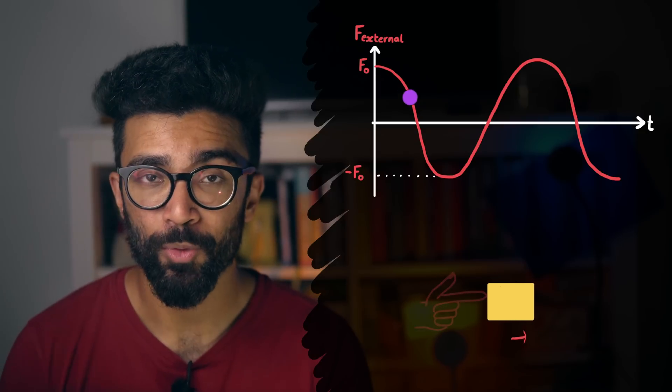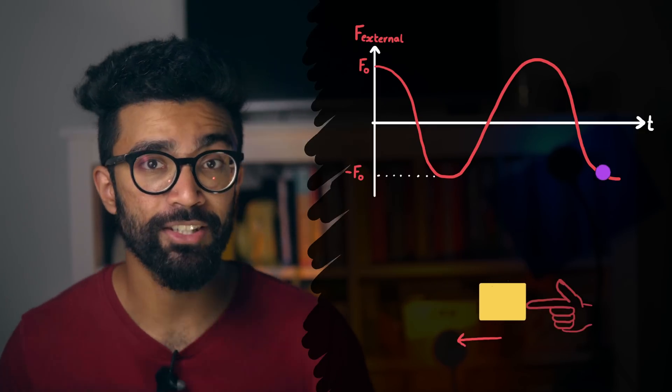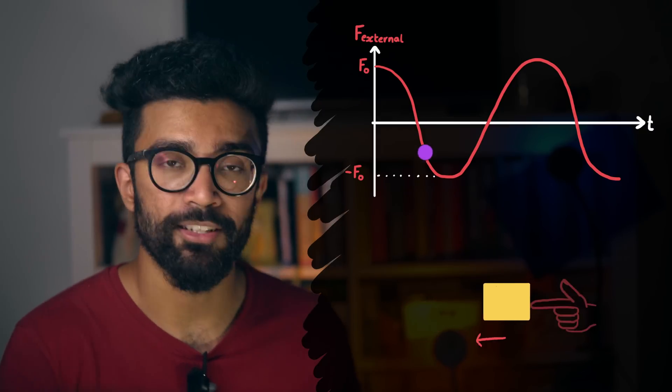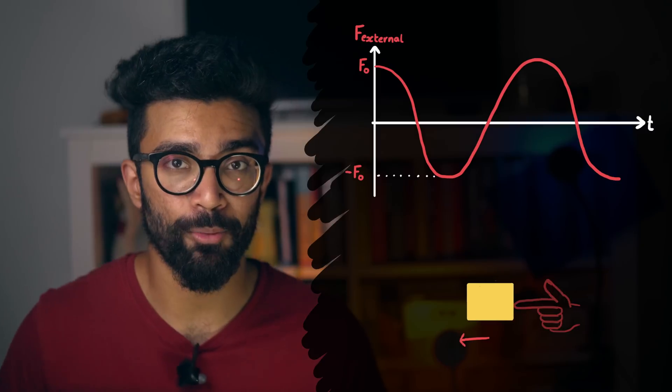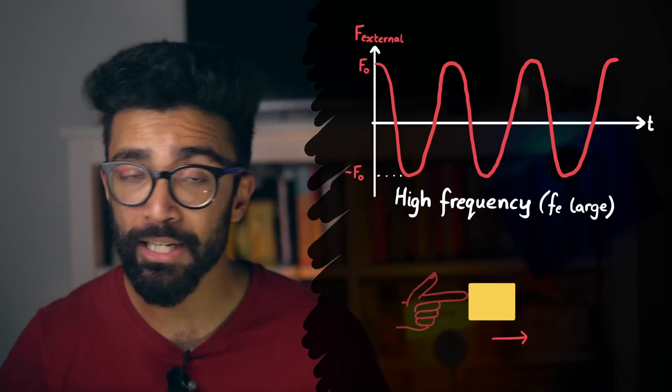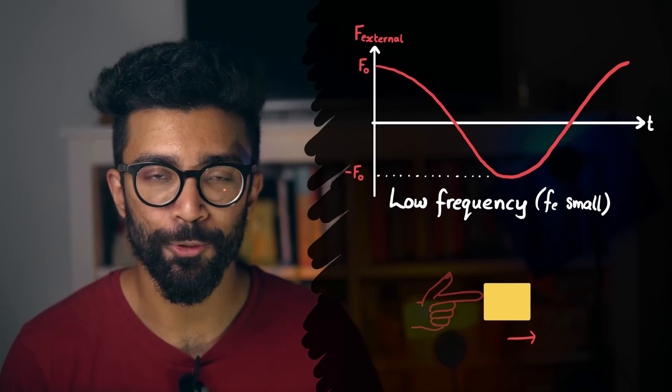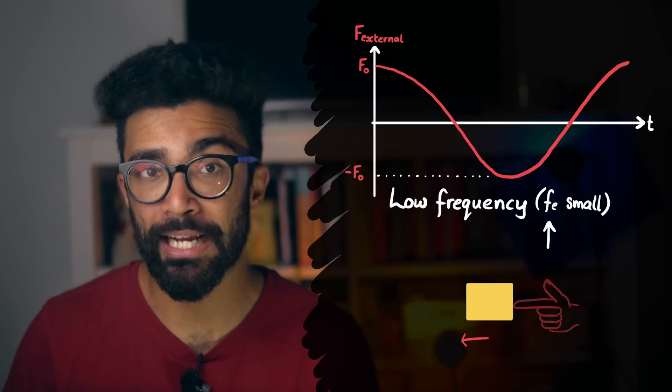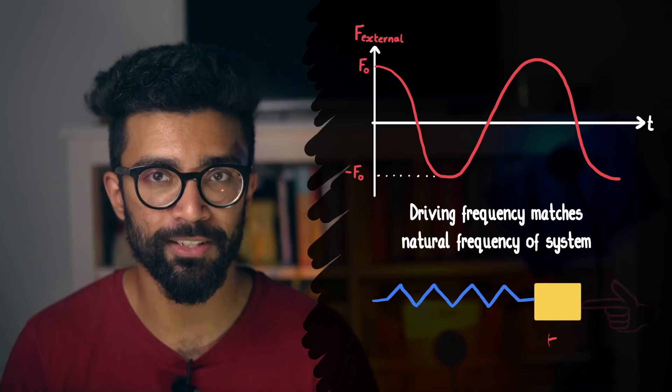So the strength of the force varies like a sine curve or a cosine curve or something like that. Now the frequency with which this force is changing doesn't necessarily have to match the natural frequency of oscillation of the system itself. We could change the strength of the force at any rate that we want to. We could change it really quickly or we could change it really slowly. Let's call the frequency with which this force varies F subscript E, where E stands for external.